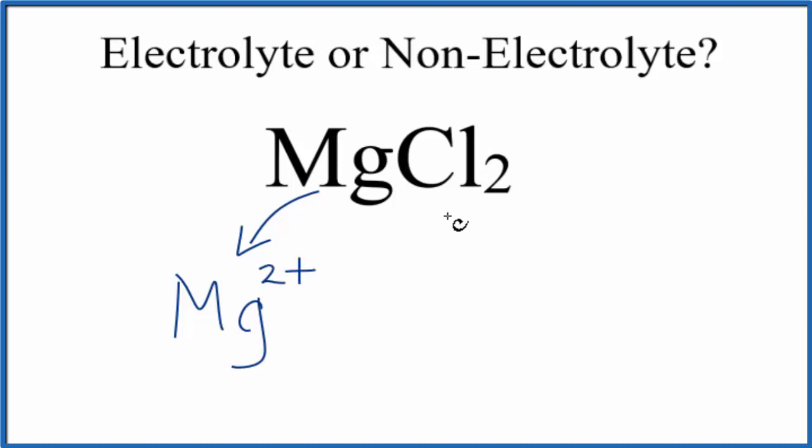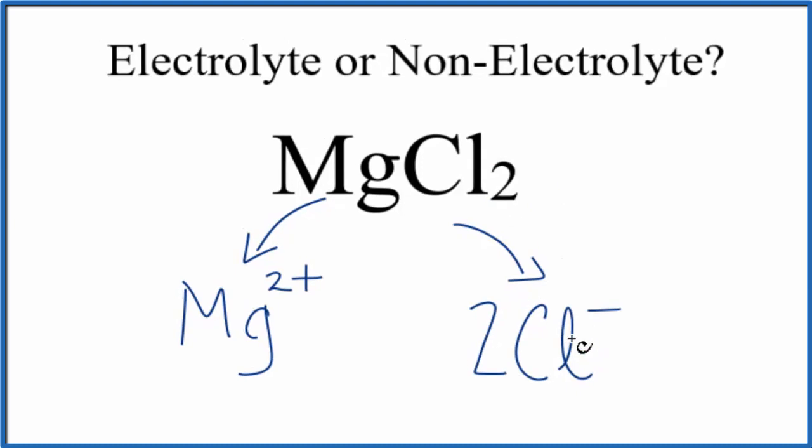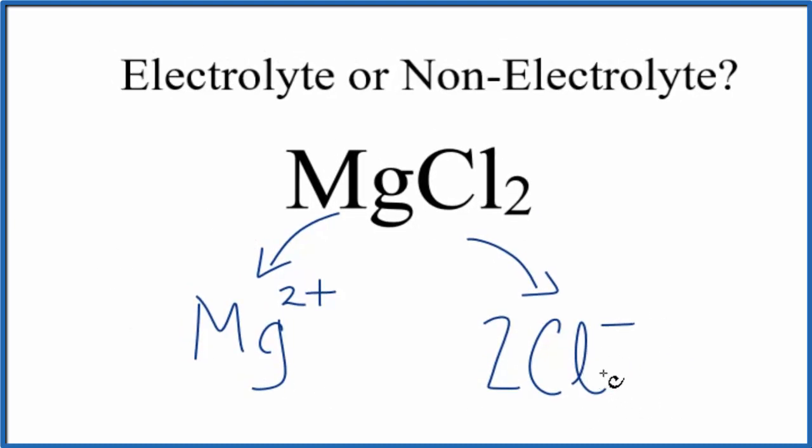And then chlorine, that's in group 17, sometimes called 7A. That'll be Cl minus. And to balance the charges, see this two here, we have two chlorine atoms. So these are the ions that we'll get when magnesium chloride dissolves in water.